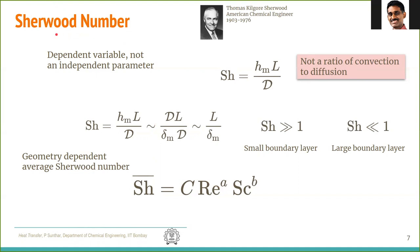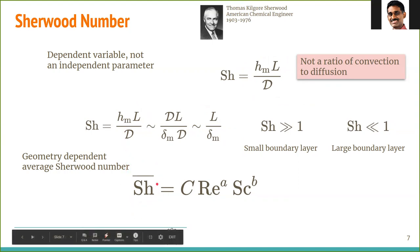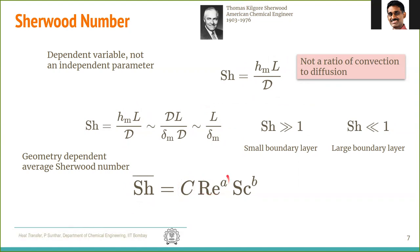Sherwood number is very similar to Nusselt number and is named after American chemical engineer Thomas Kilgore Sherwood. It is also a dependent variable denoting the dimensionless mass transfer coefficient: Sh = h_m·L/D. This is not a ratio of convection to diffusion but the inverse of the species (mass) boundary layer thickness. For large Sherwood number, the boundary layer is small and mass transfer coefficient is high; for small Sherwood number, the boundary layer is large and mass transfer coefficient is small. Correlations take the form Sh = C · Re^A · Sc^B.